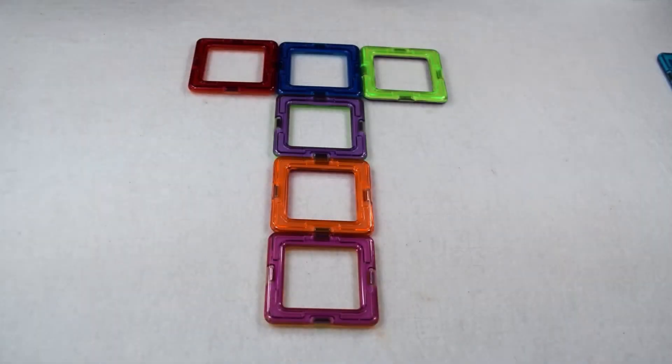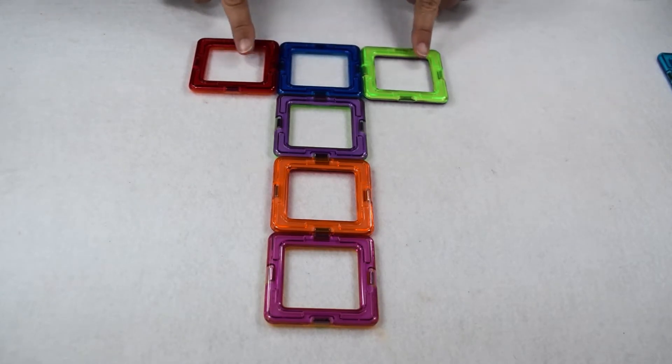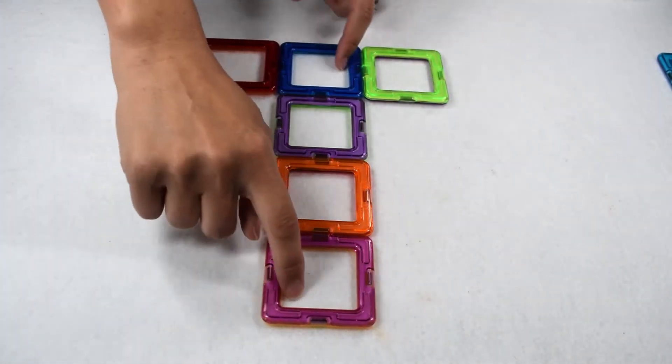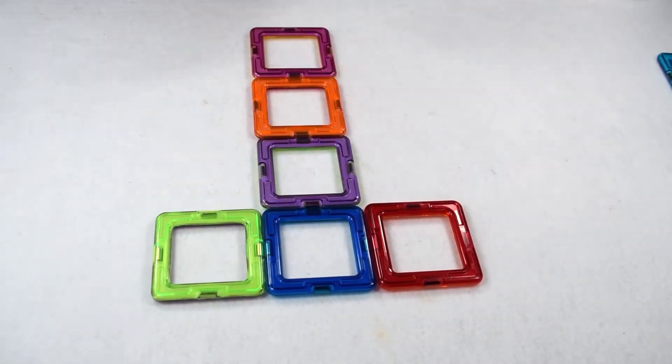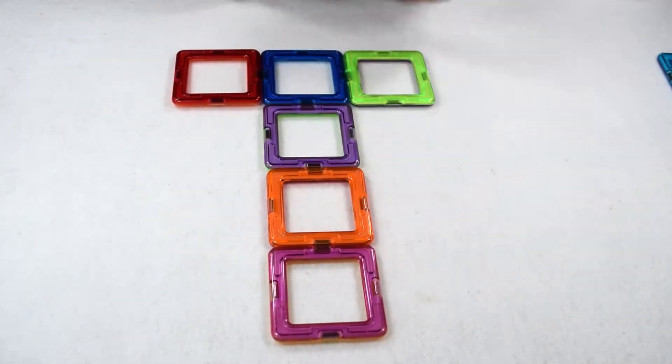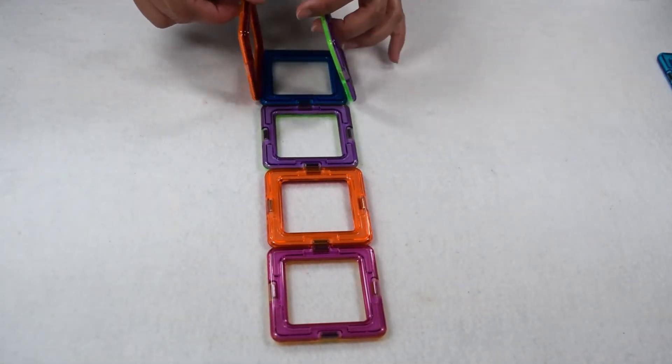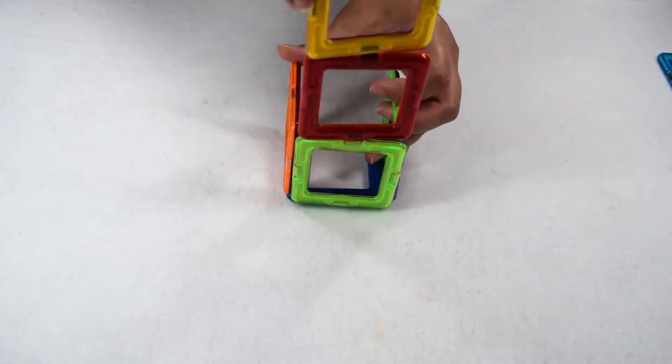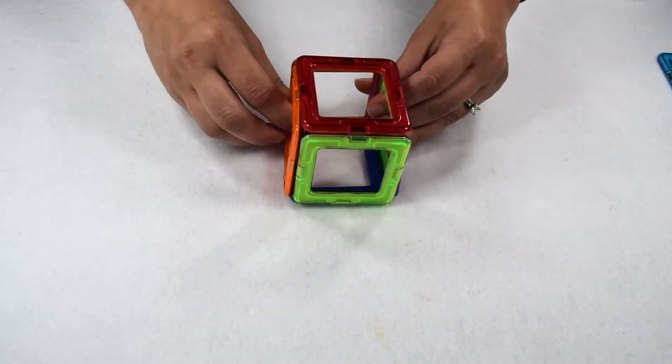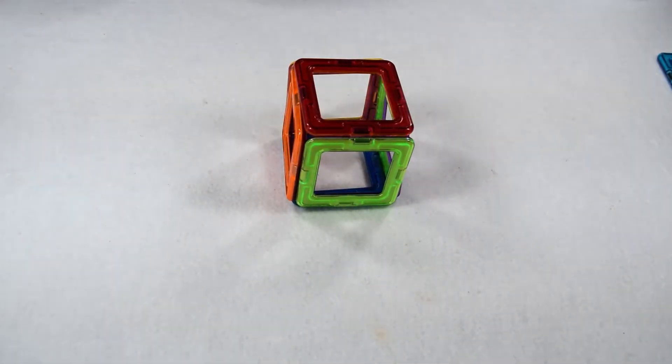We're going to start by arranging our squares in a capital T to make the first net of our cube. It doesn't matter if we put our three across at the top or at the bottom because either way, one would just be a rotation of the other. So let's go back to our original arrangement and test to make sure it works. We can fold up these two sides and then wrap these around the front, top, and back and see that it does indeed form a cube.